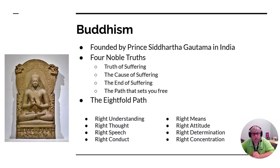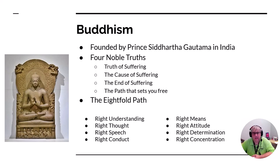What is the Eightfold Path? Right understanding — you must understand why you're in your situation. Right thought — remain positive and know you can overcome your suffering. Right speech — say the right things and don't go out of your way to hurt people. Right conduct — personally act gently and kindly. Right means to live financially in a way that you can. Right attitude — be positive. Right determination — persevere and don't give up. And right concentration — often considered to be meditation.